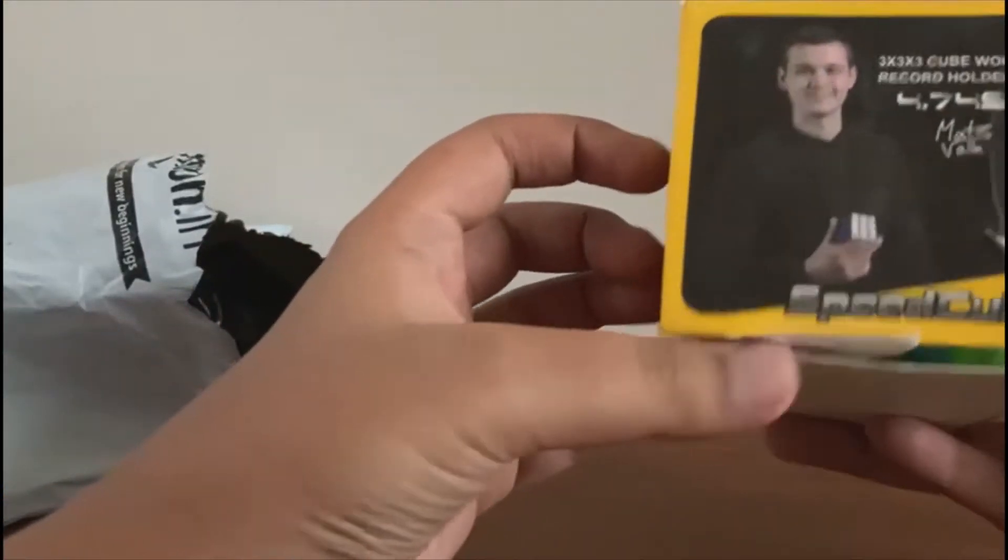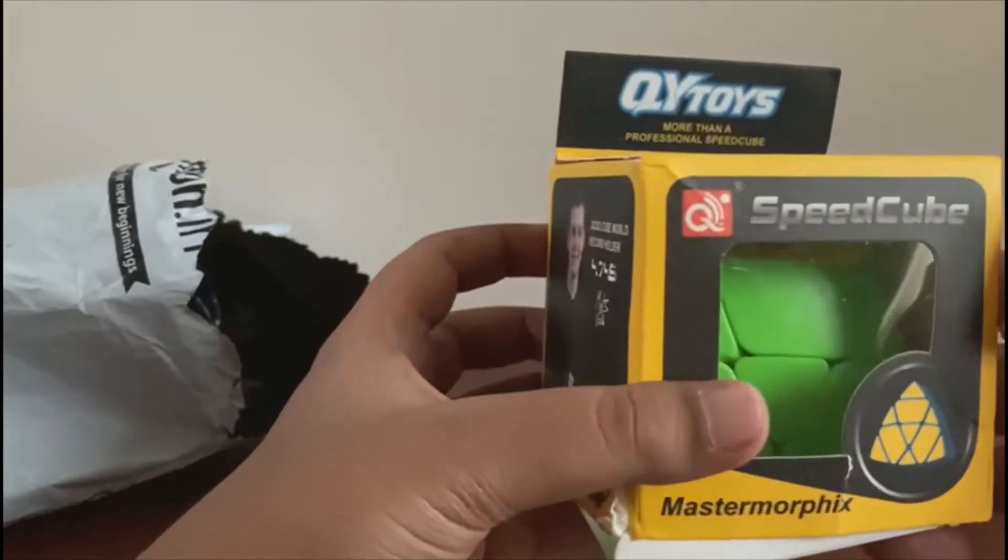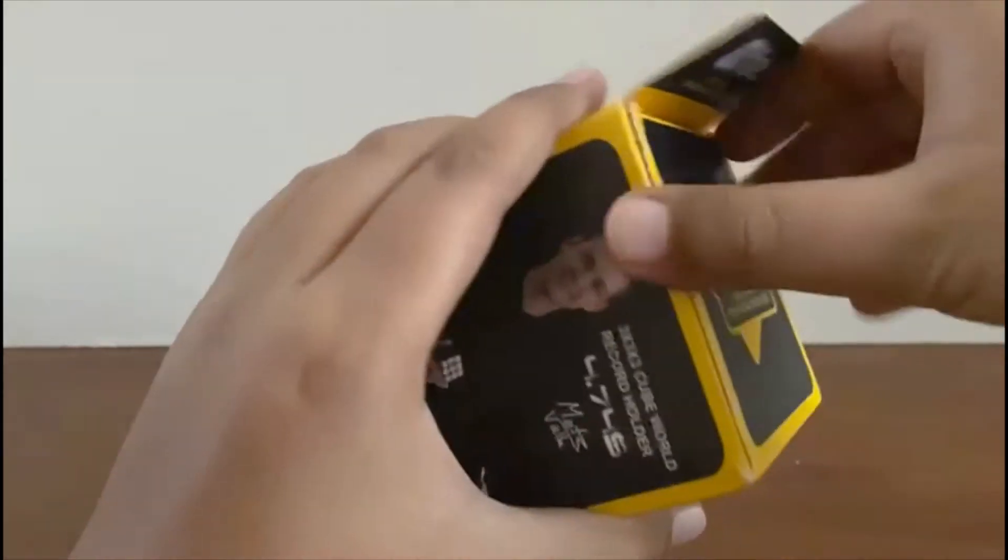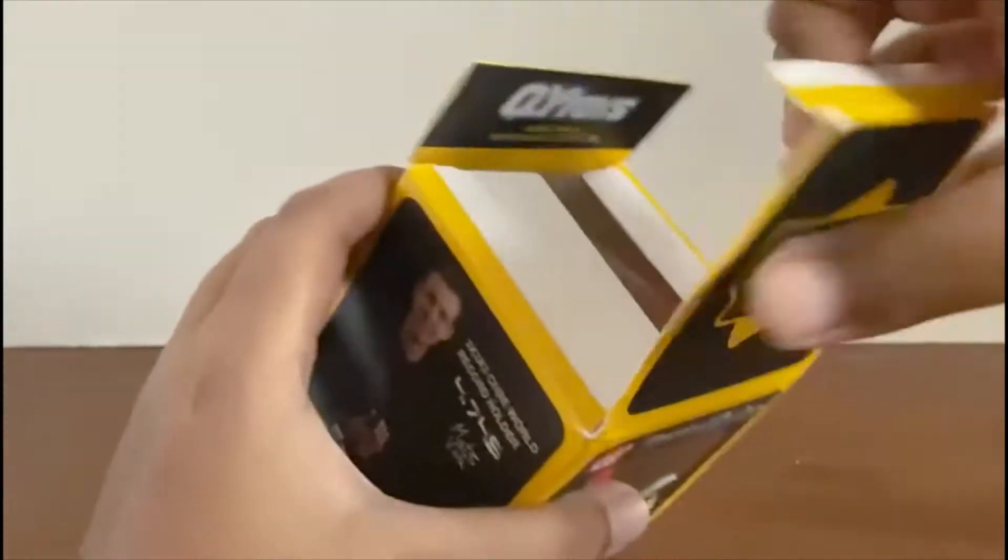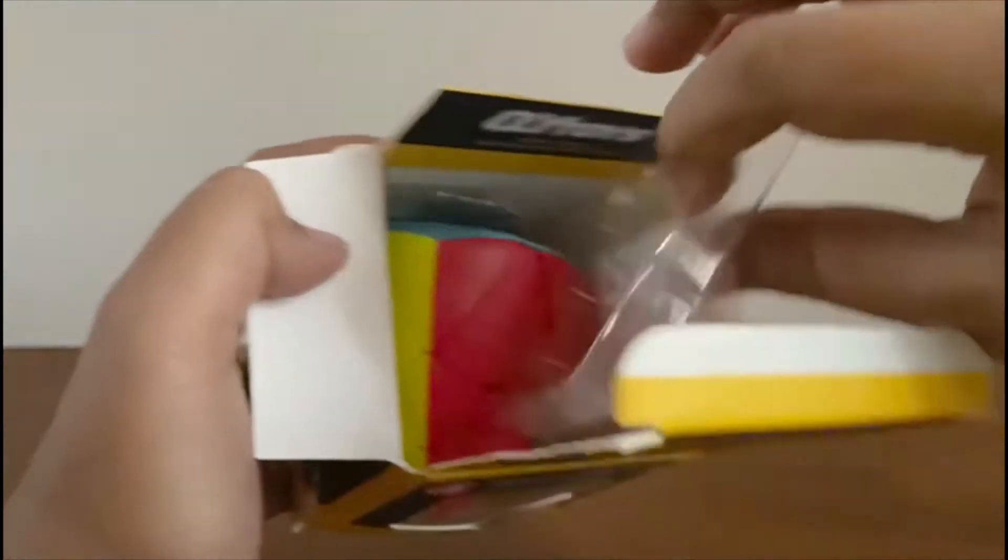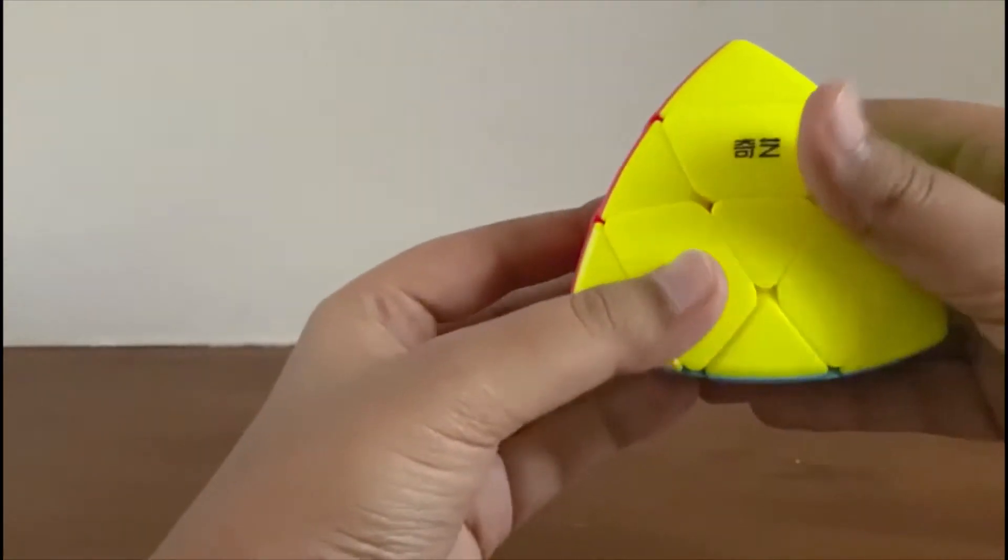We can look, this is a master morphics cube. Now let's open this. I will put this in the description. Let's open up, this is our cube. Let's turn this.